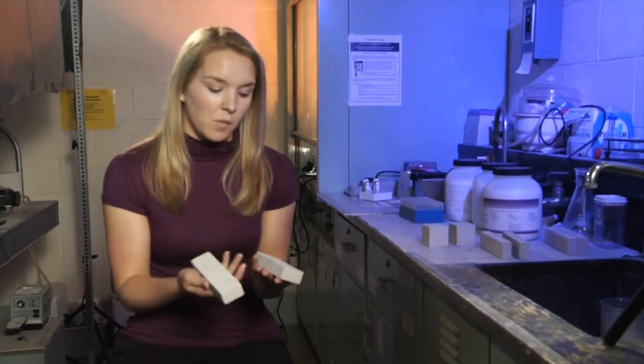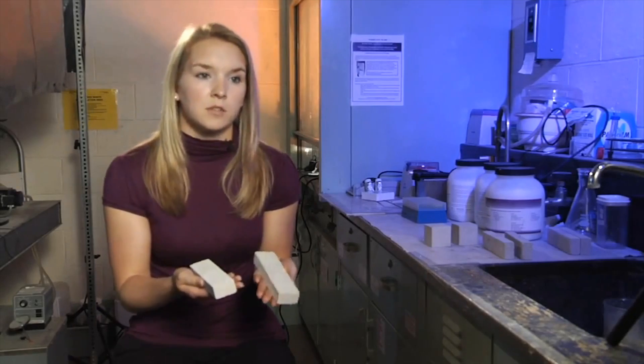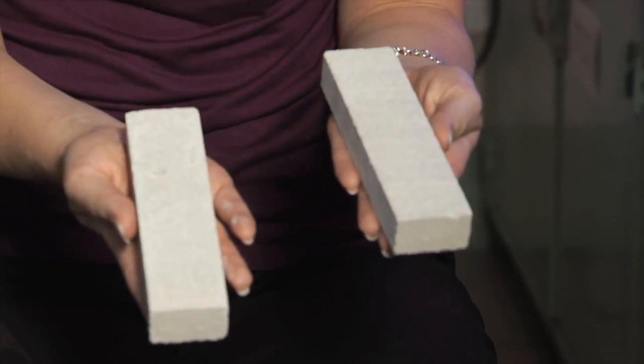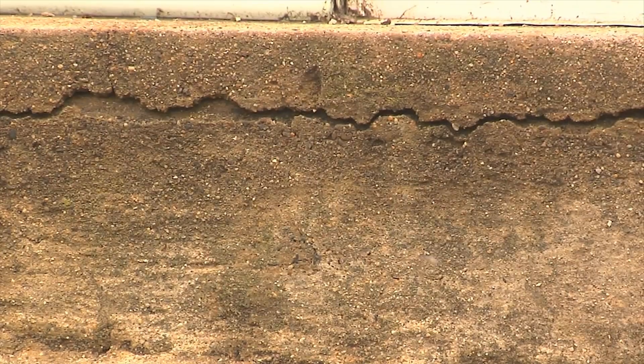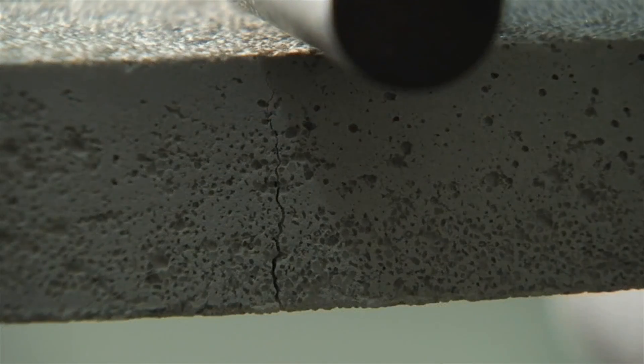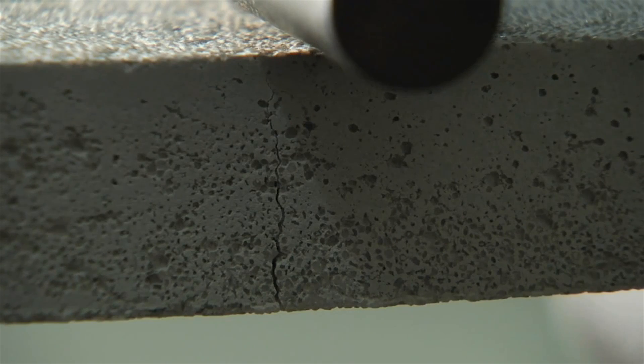These are just a couple of the samples that we made for some of the tests that we do. The way ours works is the samples contain little microcapsules that have a healing agent in the core and when a propagating crack ruptures the microcapsule, it'll release the agent and it'll react with the constituents that are already inside the concrete and it'll form a product that will heal the crack.